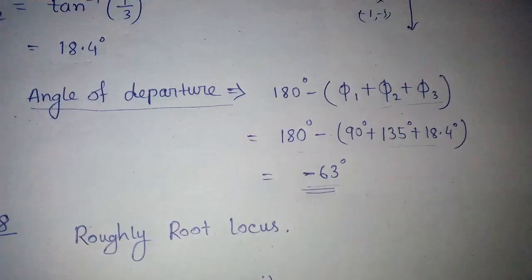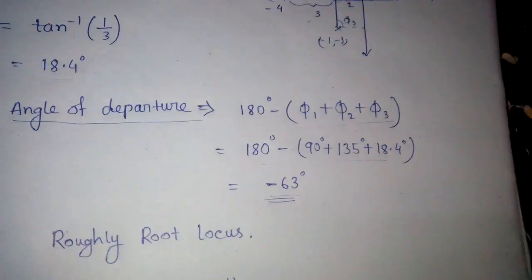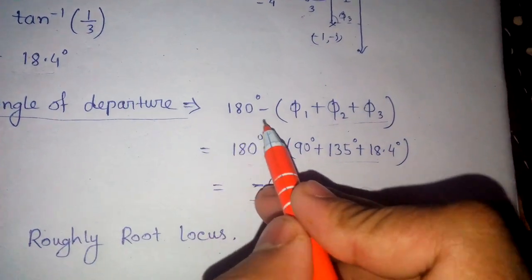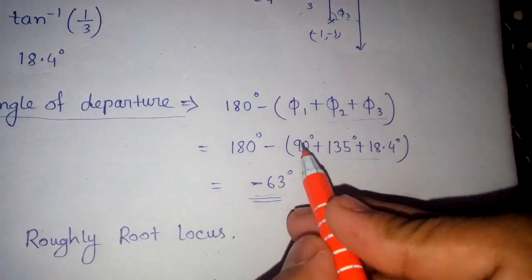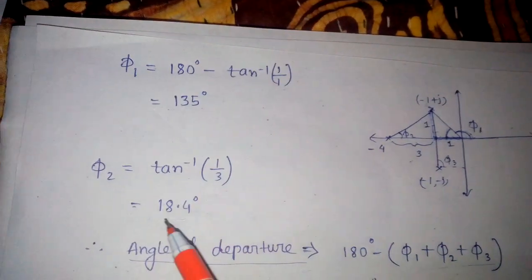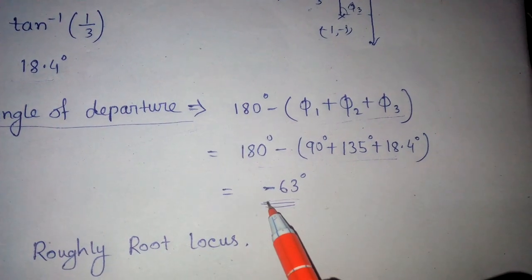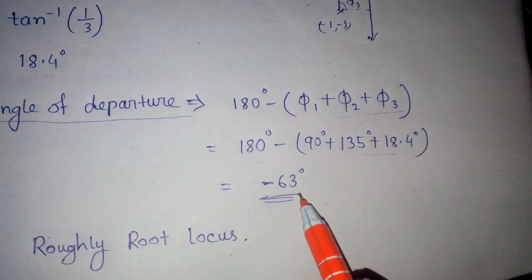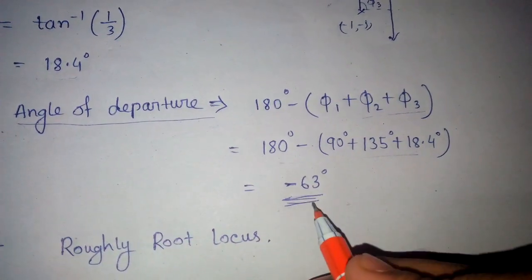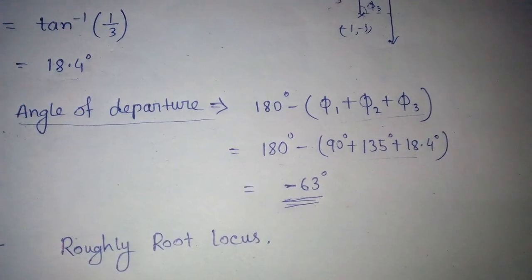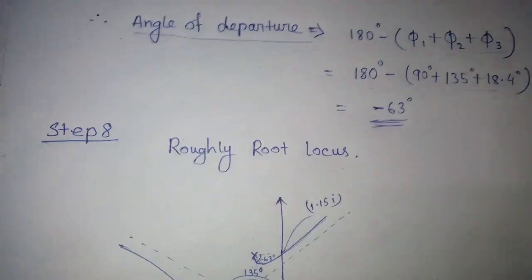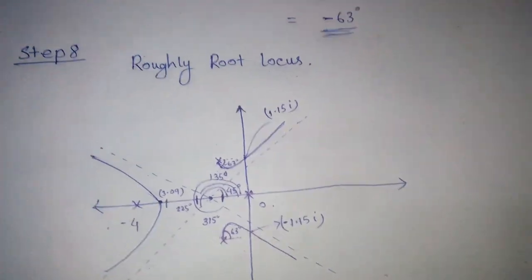The formula for angle of departure is 180 degrees minus (φ1 plus φ2 plus φ3). Substituting the known values: 180 minus (135 plus 18.4 plus 90) gives minus 63 degrees. So the angle of departure is plus or minus 63 degrees.